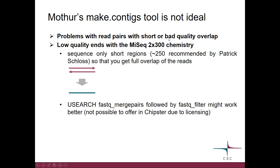The bad quality problem is often the case with the MiSeq 300 chemistry, which produces low quality ends. The developer of the mothur package, Patrick Schloss, has recommended that it's better to sequence only short regions, about 250 bases, and make sure that you get the full overlap of the reads.